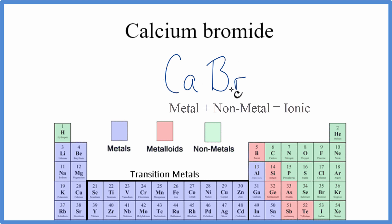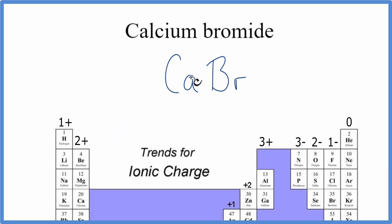When we have a metal and a non-metal, we have an ionic compound, and with ionic compounds, we need to take into account the ionic charge. So we look at the periodic table again, and we see calcium, that has a 2 plus ionic charge. The bromine, it has a 1 minus charge.